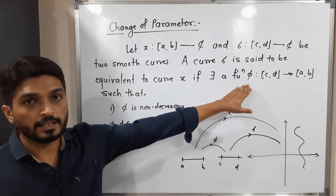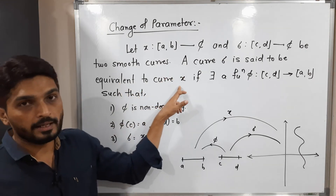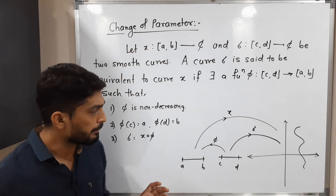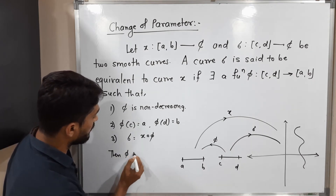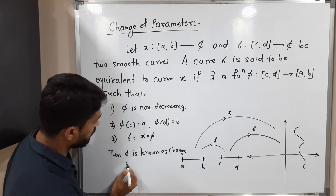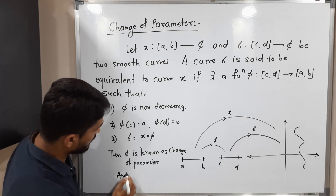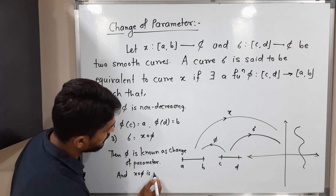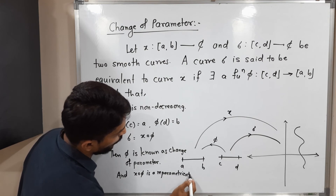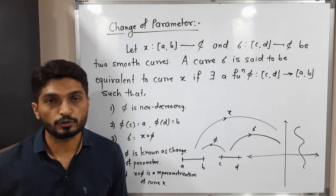If such a function φ exists satisfying all three conditions, then we say curve σ is equivalent to curve χ. Here φ is known as the change of parameter, and χ∘φ is called a re-parameterization of curve χ.